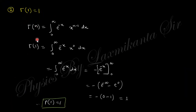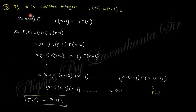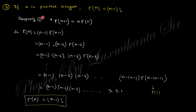The next property: Γ(1) = 1. Since Γ(n) = the integral from 0 to infinity of e^(-x) x^(n-1) dx, putting n=1 gives the integral of e^(-x), which evaluates to 1. Next, for a positive integer n: Γ(n) = (n-1)!. Using the recurrence relation repeatedly — Γ(n) = (n-1)Γ(n-1) = (n-1)(n-2)Γ(n-2) = ... — we stop when we reach Γ(1) = 1, giving Γ(n) = (n-1)!.